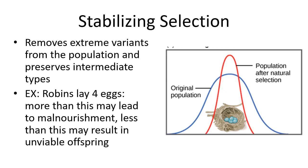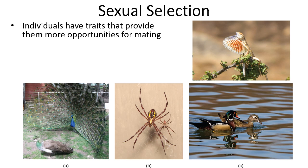Another factor affecting fitness and traits in a population is sexual selection — how males and females choose mates to reproduce. This often leads to sexual dimorphism, meaning different physical appearances between the sexes. Examples include the male peacock's huge feathers, a female spider being much larger than the male, the brightly ornamented male wood duck compared to the drab gray female, and a lizard's large colorful dewlap used for signaling to mates.